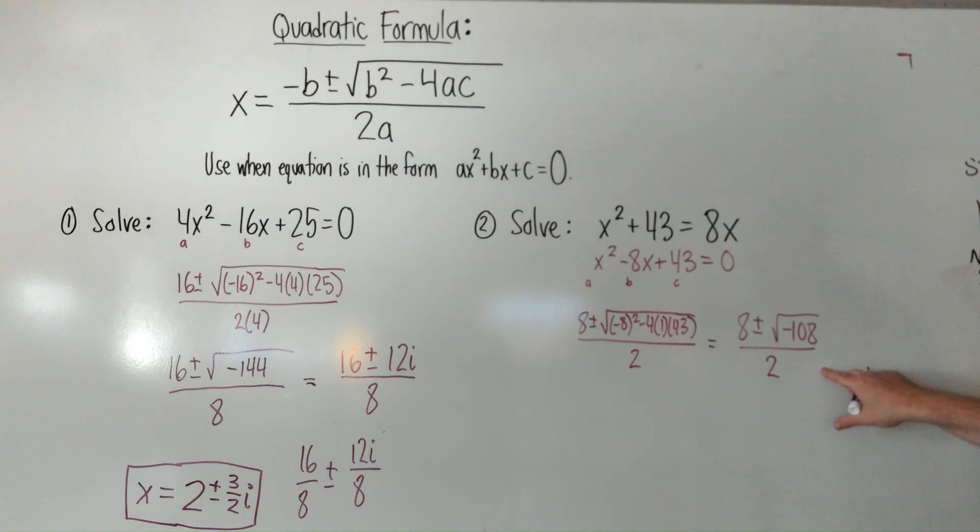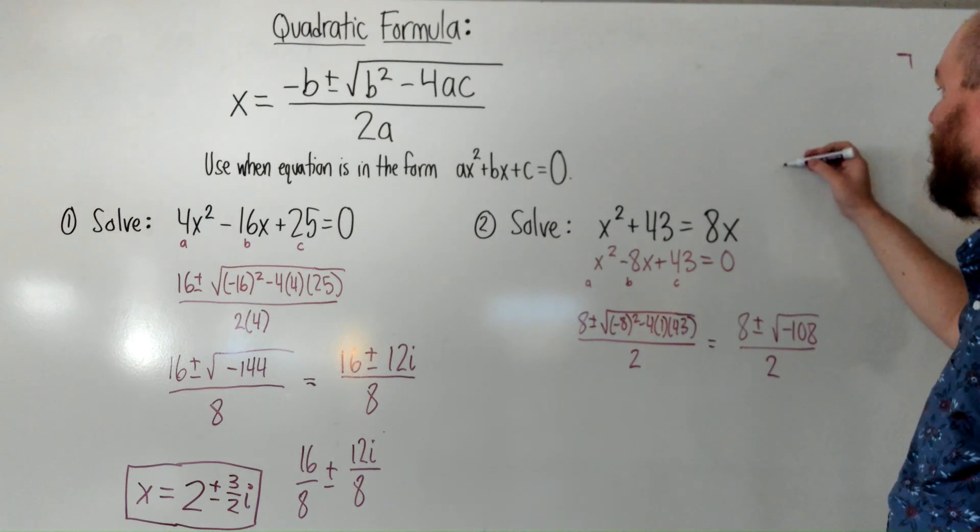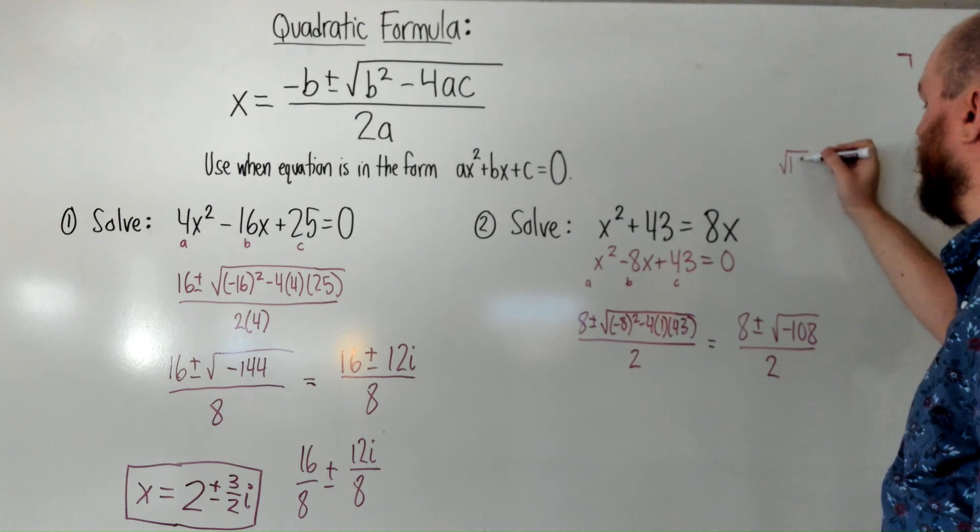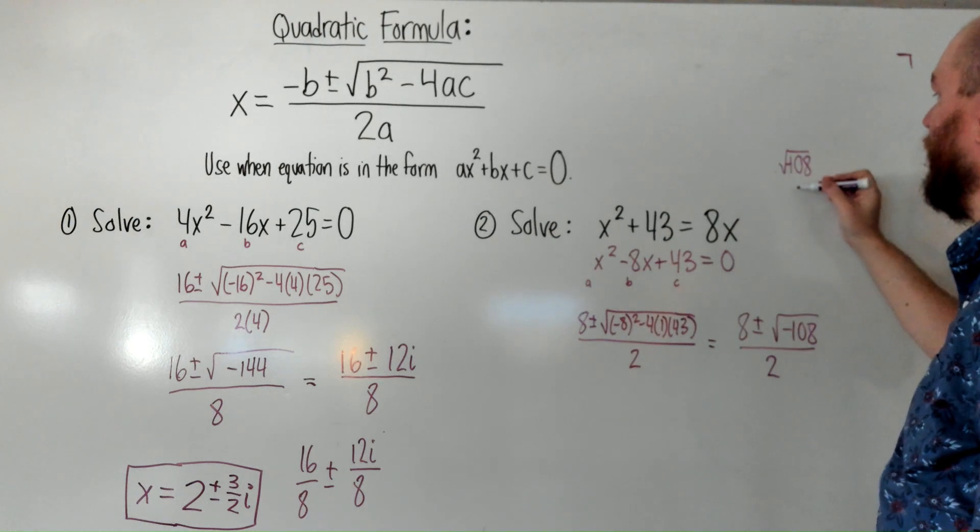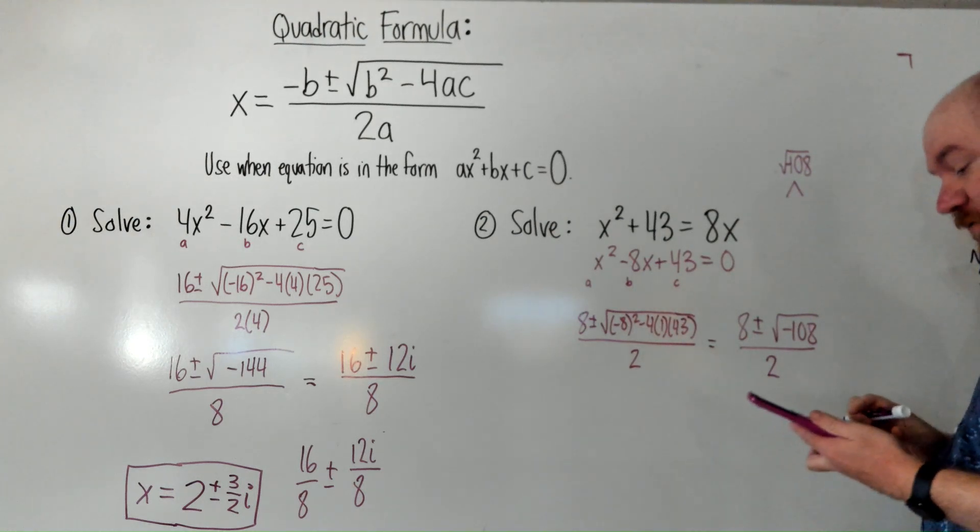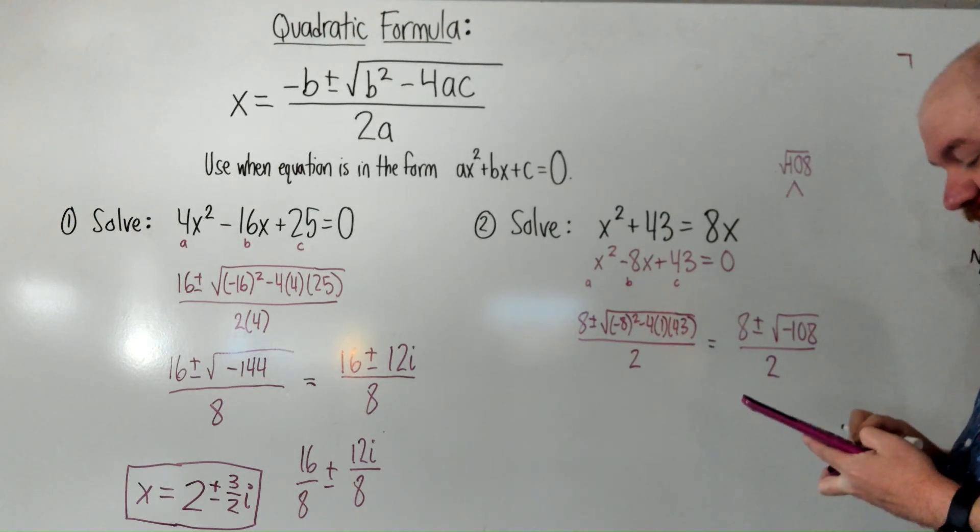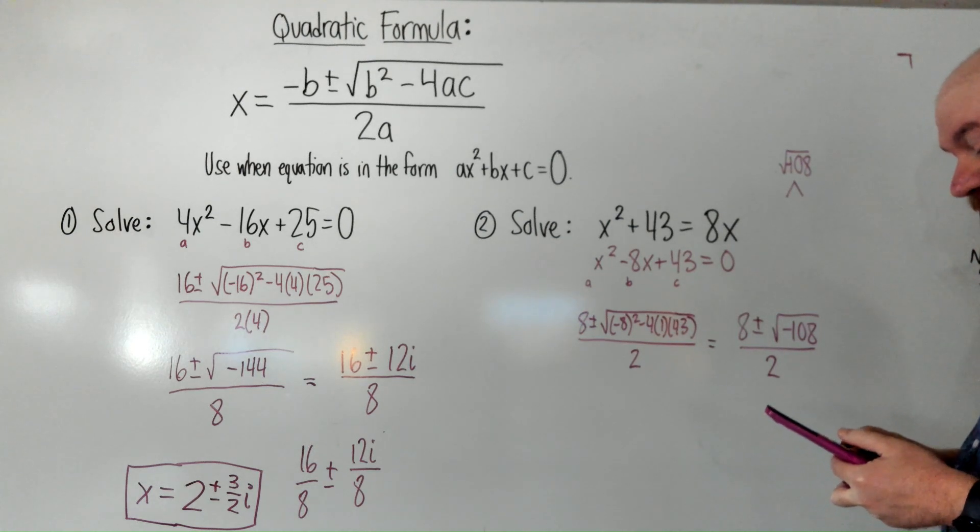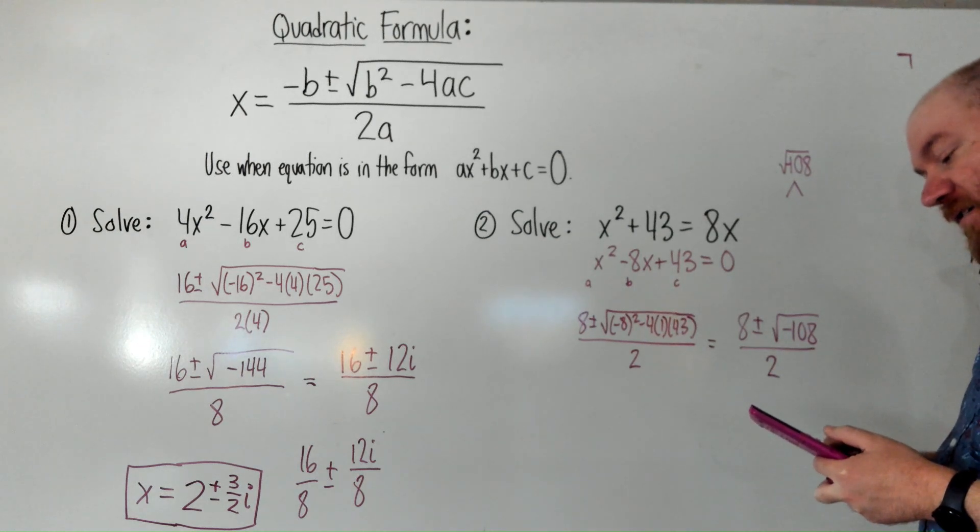Now, 108 is not a perfect square, but I'm going to see if I can simplify it at all. Negative 108. Let's split that. I know 4 can go into it. Let's see if there's another number that can go into it that's a perfect square. So, 16 can't go into it. 9 can go into it. 36. There it is. 36.